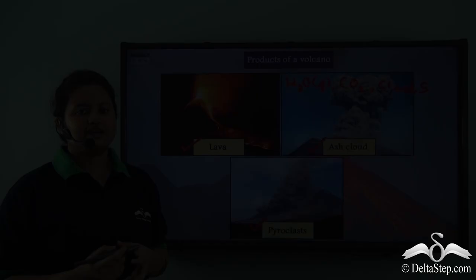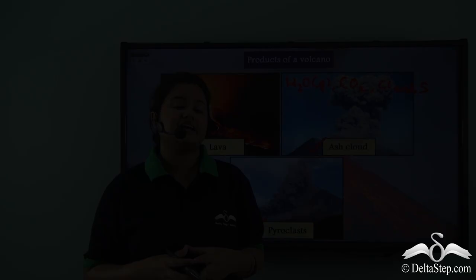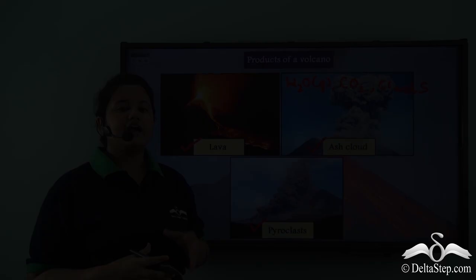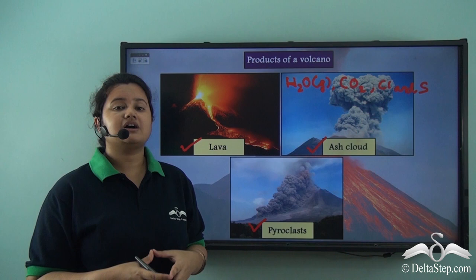Lava is in liquid state as it is a stream of molten rocks. The next one is ash cloud and it is in gaseous state as it is a combination of different gases. And finally pyroclast is a combination of rock particles and different gases.